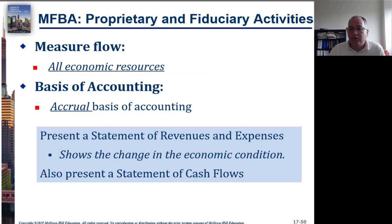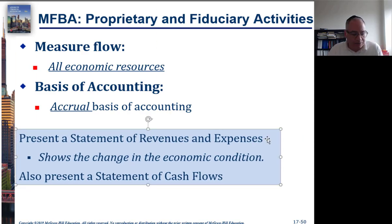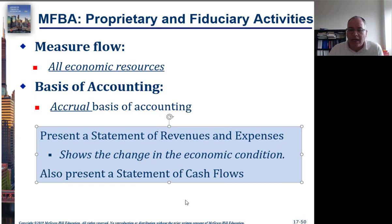For proprietary and fiduciary activities, things are quite different — we go back to what we're used to. The measurement flow is all economic resources, and the basis of accounting is the accrual basis, almost identical to financial accounting GAAP. We present a statement of revenues and expenses — not expenditures, but expenses — showing the change in economic condition, and we also present a statement of cash flows.